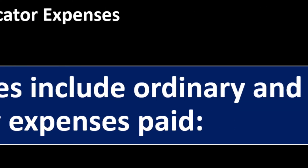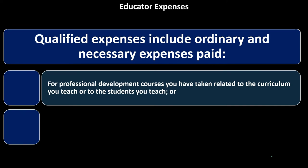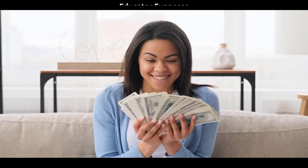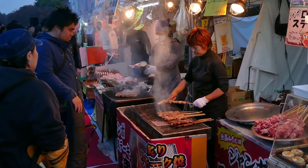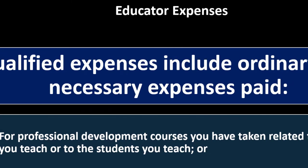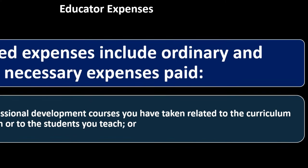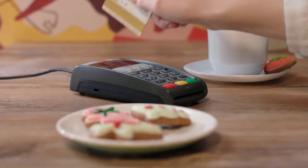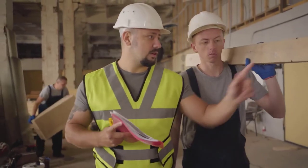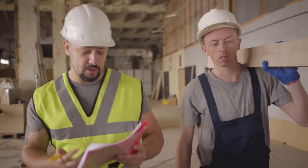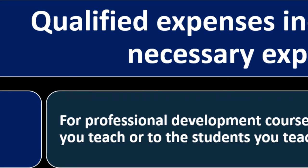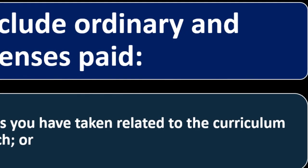Qualified expenses include ordinary and necessary expenses paid — similar to what you'd expect from a Schedule C business. With a sole proprietorship, you can deduct expenses used to generate revenue, so you're taxed on net income rather than gross. For W-2 employees, that's generally not allowed because the employer is expected to provide what's needed. The educator deduction was carved out specifically so that if you spend your own money on educator-related items, you get that deduction specific to your industry.